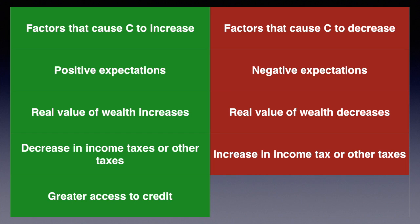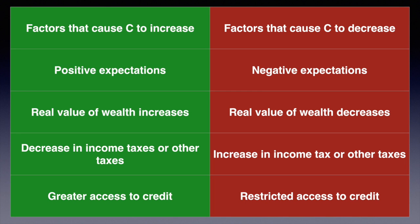Prior to the 2008 crisis, there was rapid growth of credit available, which led to many people getting mortgages they could not afford. By securing home loans quite easily, consumers were quick to purchase homes at a rapid rate, which drove up home prices and eventually led to the inevitable crash. Soon after the recession hit, credit became much harder to secure. Borrowing to buy a home is now much stricter compared to pre-crisis, and as a result, consumption is reduced and aggregate demand falls.